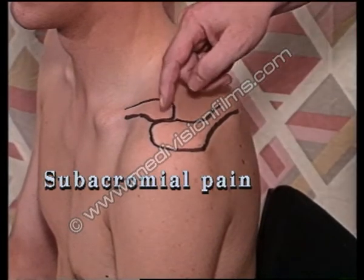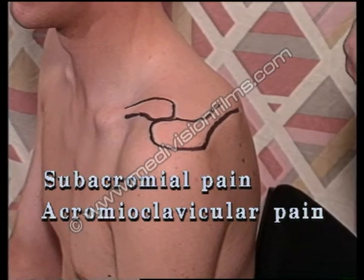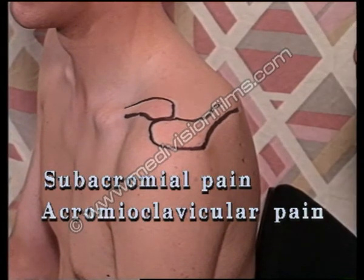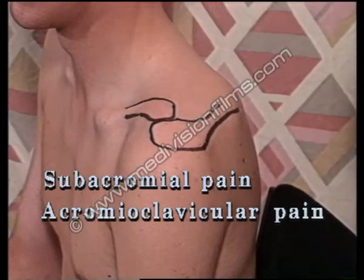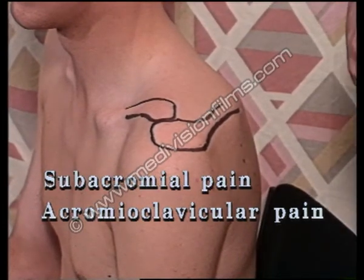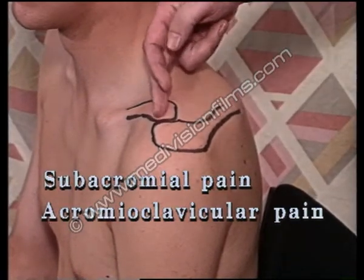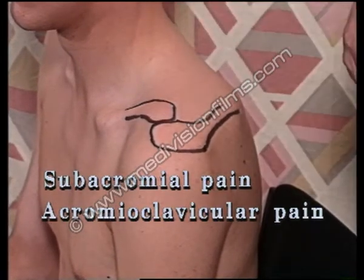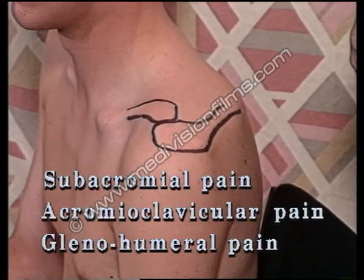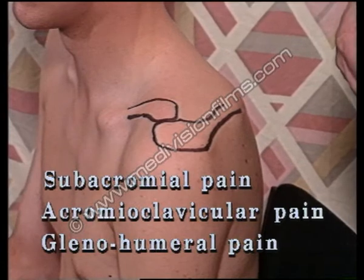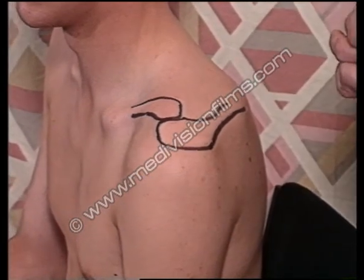Pain that arises from the acromioclavicular joint is typically much more localised, and if you ask the patient where it hurts, they'll typically point with one finger to the acromioclavicular joint. So that's subacromial pain and acromioclavicular pain. The third pain is pain arising from the glenohumeral joint itself, where the leading symptom is likely to be stiffness — the sort of condition one has in mind there is frozen shoulder.